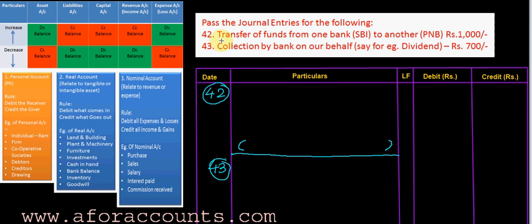Entry number 42: transfer of funds from one bank, SBI (State Bank of India), to another bank, PNB (Punjab National Bank), rupees 1000. Pay attention because when you will be preparing cash books you will find many entries like this — transfer from one bank to another, or transfer from cash to bank or bank to cash.